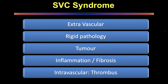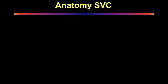The intravascular component causing SVC obstruction is usually thrombus. Intravascular tumors within the SVC are very rare. Nowadays, because interventional cardiology and radiology have become so widespread, the incidence of SVC thrombus has gone up quite dramatically. Very often the obstruction is secondary to a thrombus caused by an intravascularly placed device.